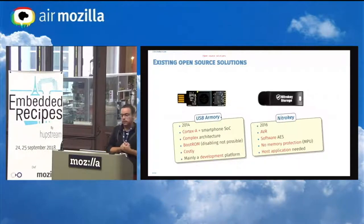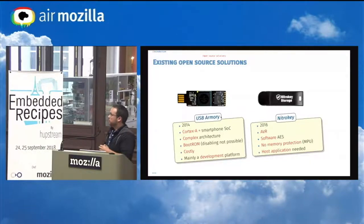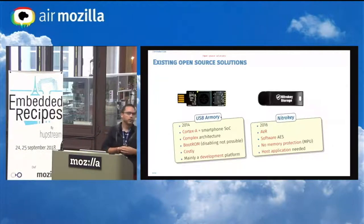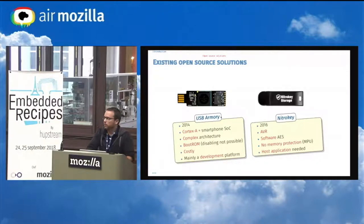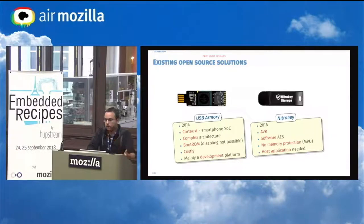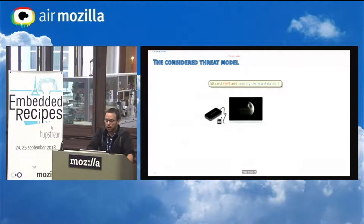Another interesting project is the NitroKey — a real USB thumb drive based on a small microcontroller. But it is too small for security: there is no hardware acceleration for encryption and decryption, and no memory protection unit for memory segmentation. So we were a bit disappointed, but since some of us know electronics, we decided to develop our own platform.